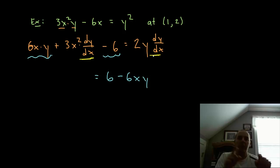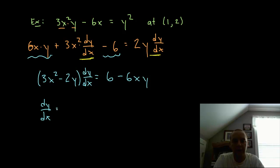And then I'm going to move the terms with the dy dx to the left, and if you don't mind at the same time, I'm also going to pull out that common factor of dy dx that they have. So I have 3x squared minus 2y, as I move this to the left, and they both have a dy dx, so I factored it out. So dy dx would be 6 minus 6xy, all divided by 3x squared minus 2y.